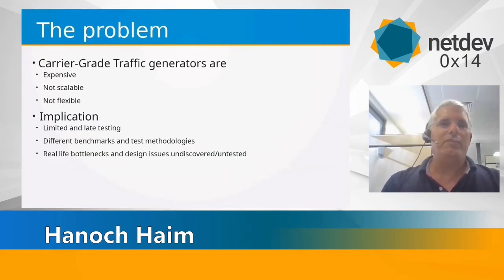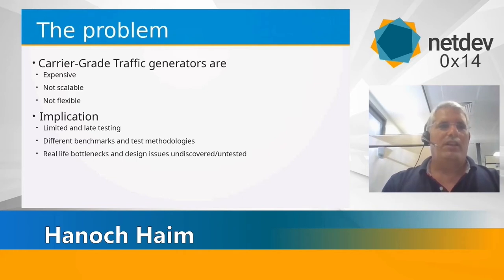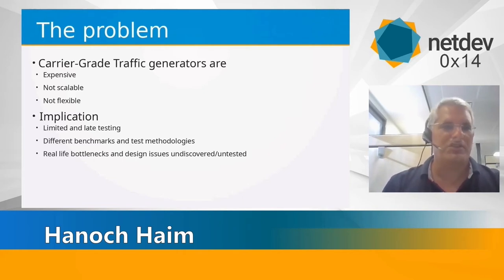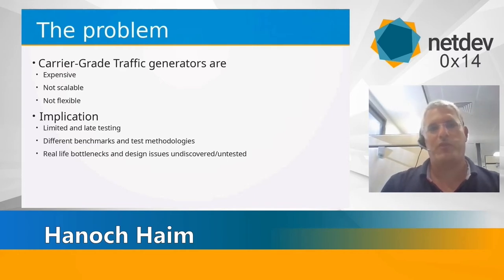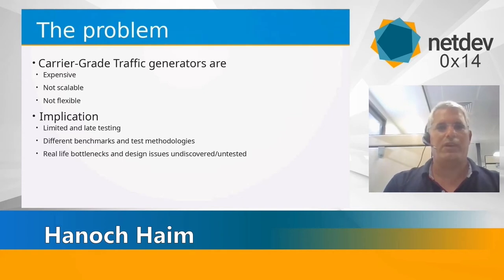The problem that we had at the start, why we started T-Rex, is that carrier-grade or commercial traffic generators are super expensive, not scalable, and not flexible — we couldn't change them. The implication is quality: the quality of our product. It means we are limited in late testing, different benchmarks, and bottlenecks — we cannot find the real bottlenecks of our product.